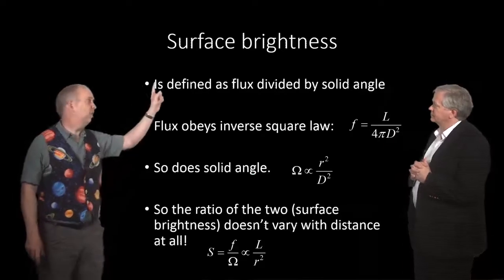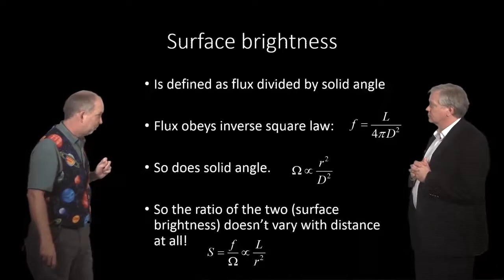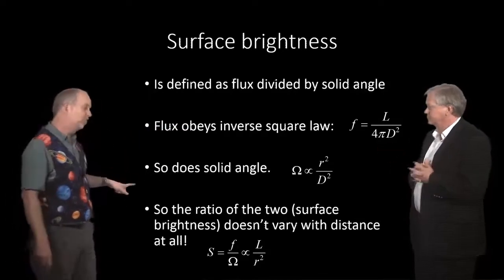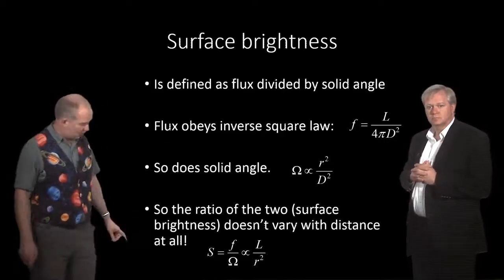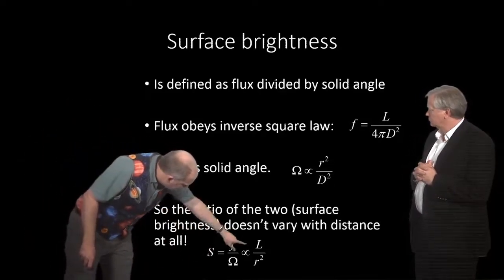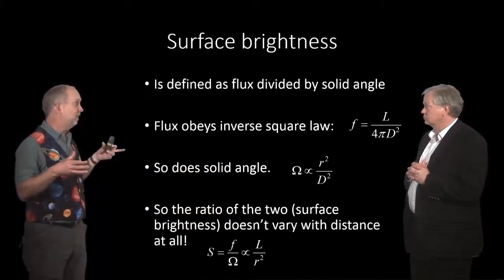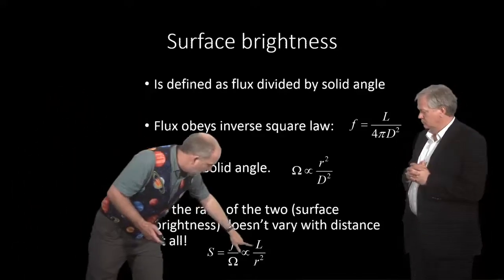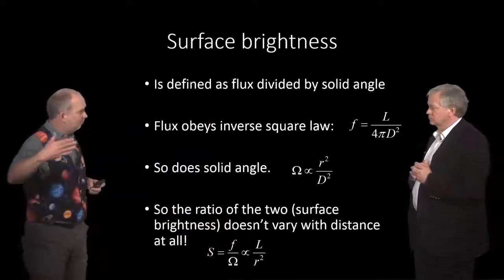Now we can define surface brightness as the flux per unit solid angle. And so flux goes as the inverse square, or it goes as 1 over d squared. But then so does solid angle. We've just said it also goes as 1 over d squared. So the ratio of the two, which is called surface brightness, is just going to be the flux divided by the solid angle, which is going to be the luminosity over r squared, neither of which depends on the distance to this thing. It just depends on the power put out per unit area. Yep. So that's all the surface brightness is. It doesn't depend how far away it is.